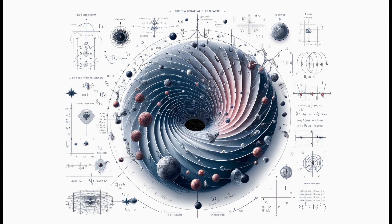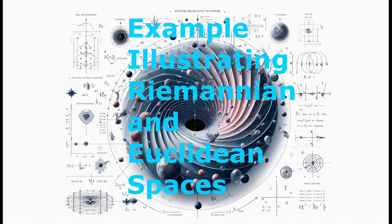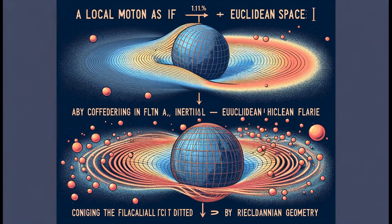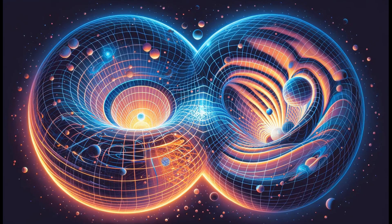To illustrate the difference between Riemannian and Euclidean spaces and to highlight the implications of the equivalence principle, consider the trajectory of a freely falling particle in a gravitational field. Locally, in a sufficiently small region, the particle's motion can be described as if it were in a flat, inertial, Euclidean frame, obeying Newton's first law.